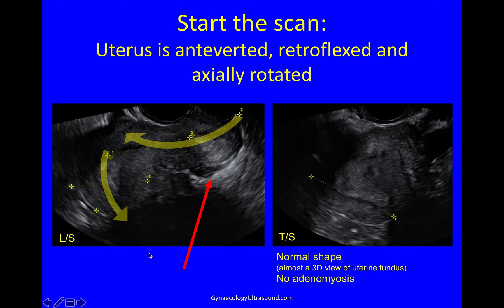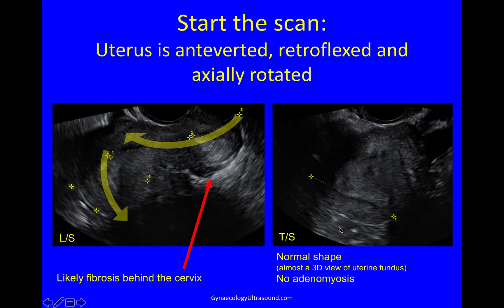You can also straight away notice that there's a lot of white behind the cervix there, and this is retrocervical fibrosis most likely. When we look at the uterus in the transverse plane, you can see this is not in a straight line down. Although I've turned 90 degrees anticlockwise on this point, you can see this uterus is rotated up toward that side — otherwise it would be in a straight line. So it's axially rotated as well.